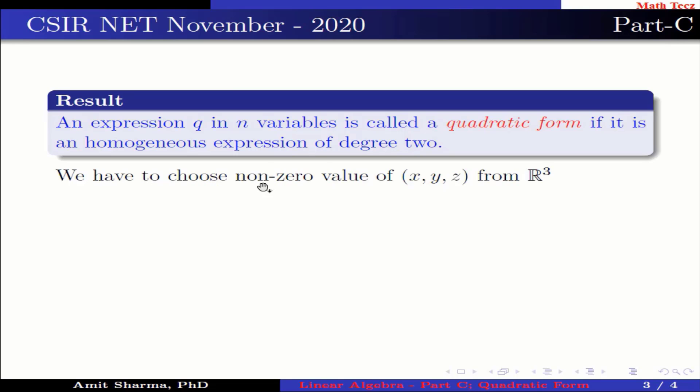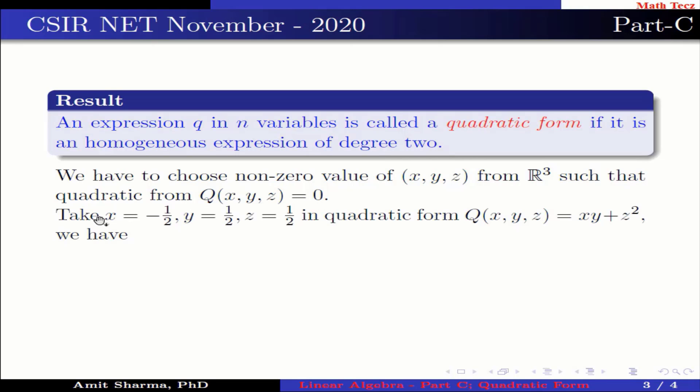We have to choose non-zero values of x, y, z from R³ such that the quadratic form Q(x,y,z) = 0. Take x = -1/2, y = 1/2, and z = 1/2 in quadratic form Q(-1/2, 1/2, 1/2) = 0, which implies option 1 is right.